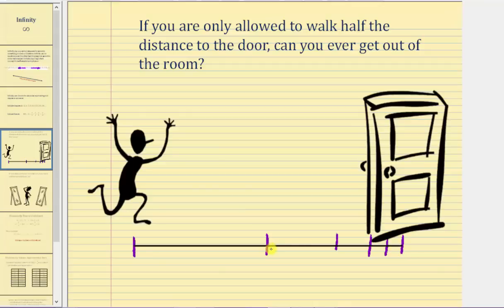You can walk an infinite number of times half the distance to the door, and because you're only allowed to walk half the distance, there's still going to be a small remaining distance each time. So we can describe this as: even walking an infinite number of times, you would never be able to leave the room.